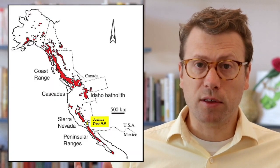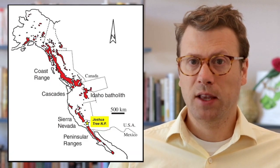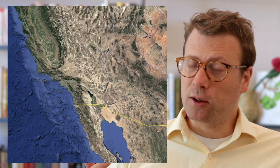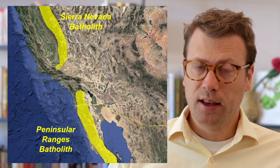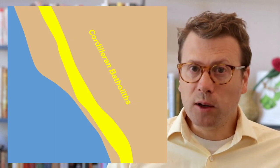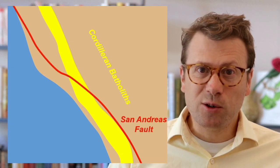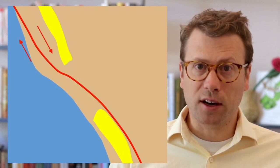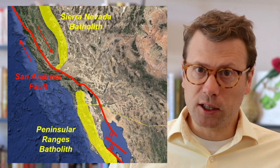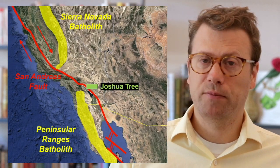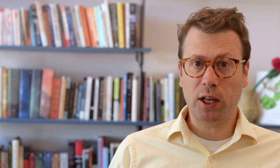Joshua Tree National Park is chiefly composed of intrusive igneous rocks that are part of the Coastal Cretaceous Batholith. These batholiths are the remnants of the Mesozoic Continental Arc and include the Sierra Nevada to the north and the Peninsular Ranges to the south. The batholiths were likely once connected but were sliced in two and disrupted by the San Andreas Fault. Joshua Tree National Park is located right where the fault cuts through, in a region called the Eastern Transverse Ranges.